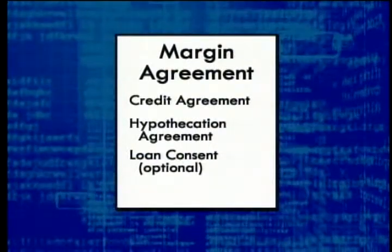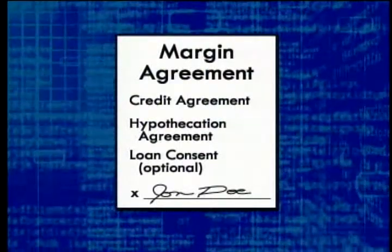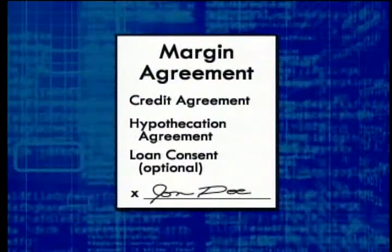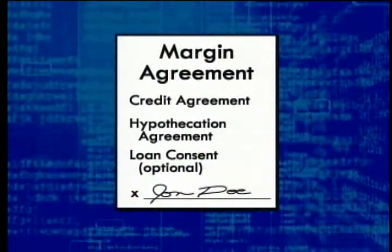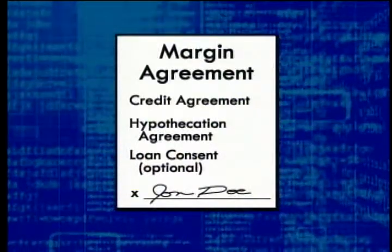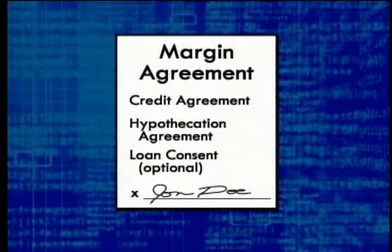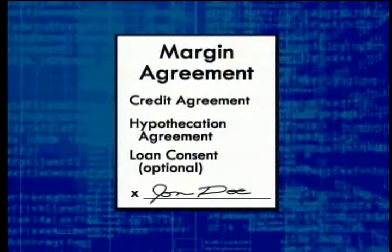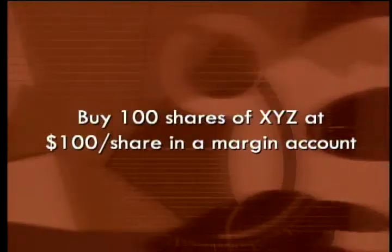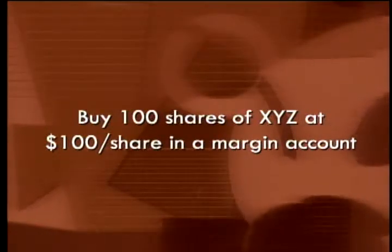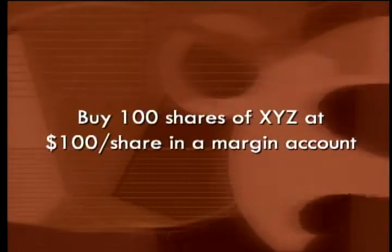The margin agreement must be signed by the customer to be valid — the customer is agreeing to the credit terms, allowing their stock to be used as collateral. Once we've set up the account, we're ready to look at how transactions actually occur. We'll illustrate the rules by following through an example of a customer making a long margin purchase.